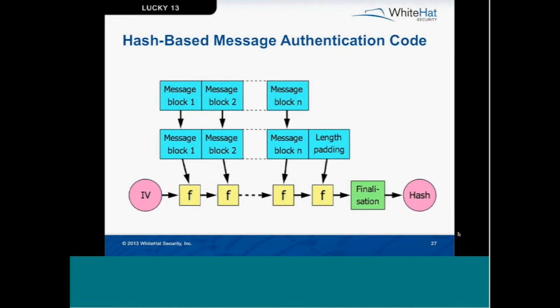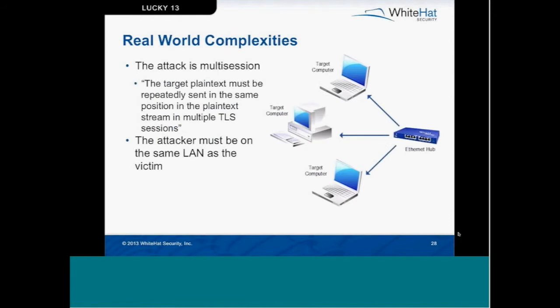The hash functions incorporate an 8-byte length field plus some special hash function padding, which actually means a one-block message can only contain about 55 bytes of real data. If you go a single byte above that, the hash function will have to run a whole extra round, causing a tiny but measurable delay.